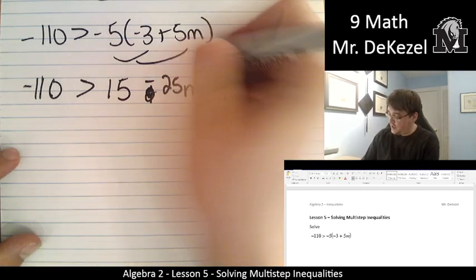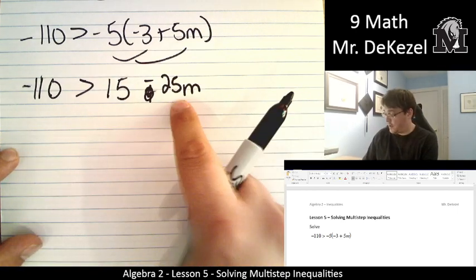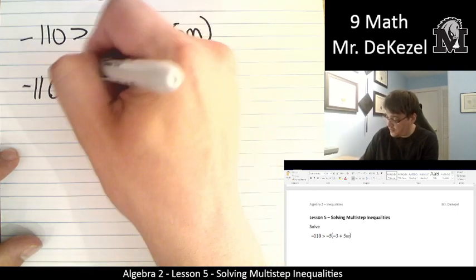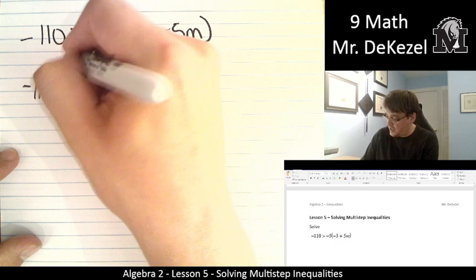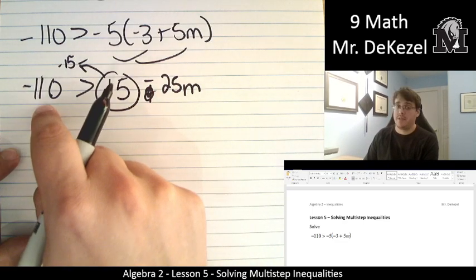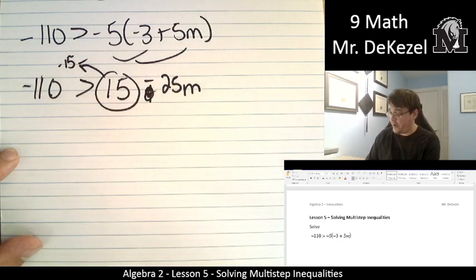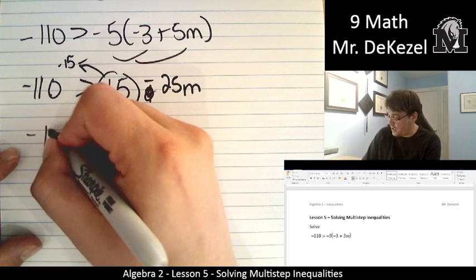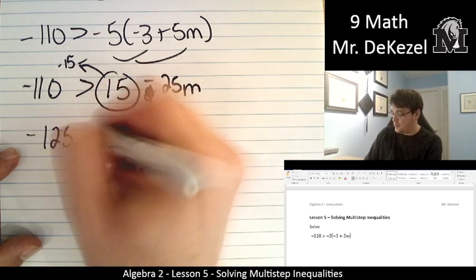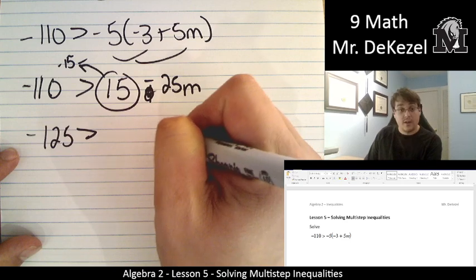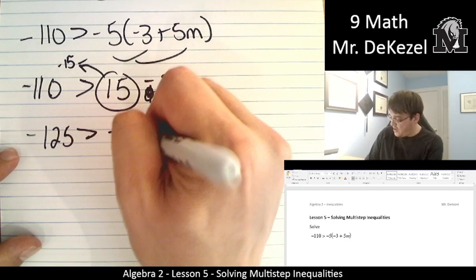So we're going to then isolate this part. So we're going to move the plus 15 over to the other side. And it's minus 15 over there. Minus 110 minus 15. We're getting farther away from the 0. So that's minus 125 is greater than minus 25m.